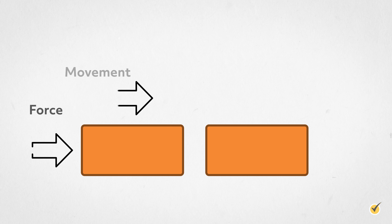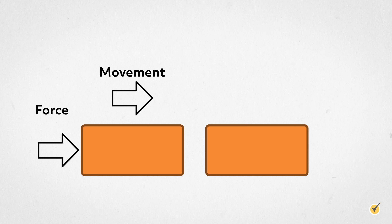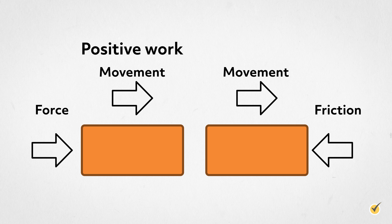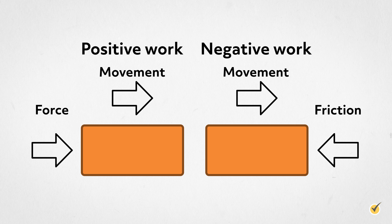It is also important to note that work can be either positive or negative. For example, if you are pushing a box across a table, the direction you are pushing the box would be considered the positive direction. The friction between the box and the table is a force in the direction opposite to the motion, so the work being done by friction is negative. Basically, negative work makes it more difficult to get positive work done.